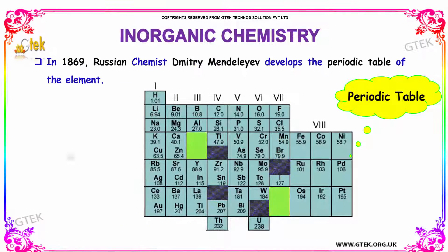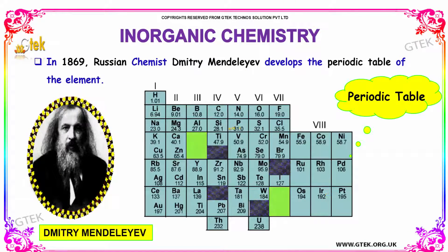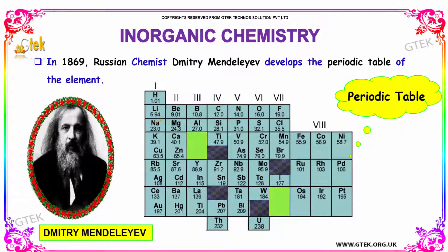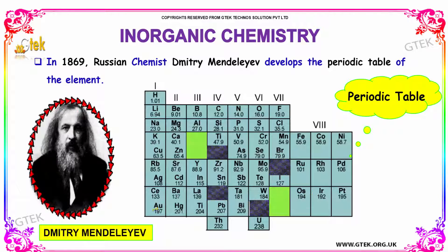Here is the periodic table. The periodic table is nothing but an arrangement of chemical elements based on their properties.